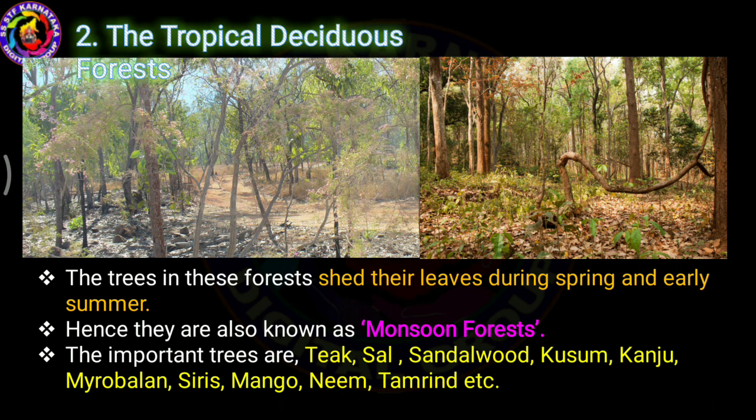Some important trees in tropical deciduous forests are teak, sal, sandalwood — which is one of the very valuable trees found here — kusum, kanju, mango, neem, and tamarind. These are all the trees found in tropical deciduous forests.